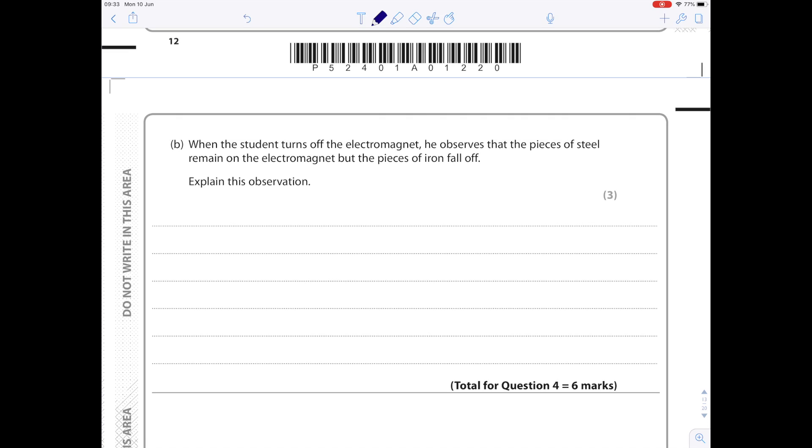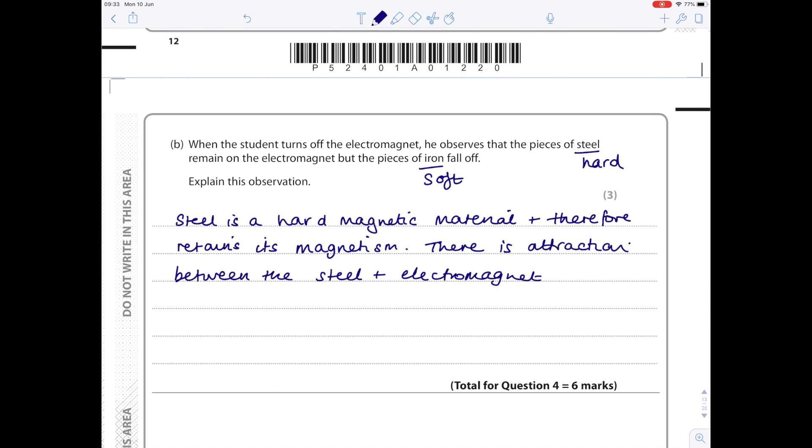When the student turns off the electromagnet, he observes that the pieces of steel remain on the electromagnet but the pieces of iron fall off. Explain this observation. That's because steel is a hard magnetic material, so it retains its magnetism. Iron is a soft magnetic material, so it loses its magnetism. Steel is a hard magnetic material and therefore retains its magnetism. Point out that there is attraction between the steel and the electromagnet. Iron is a soft magnetic material and loses its magnetism easily.